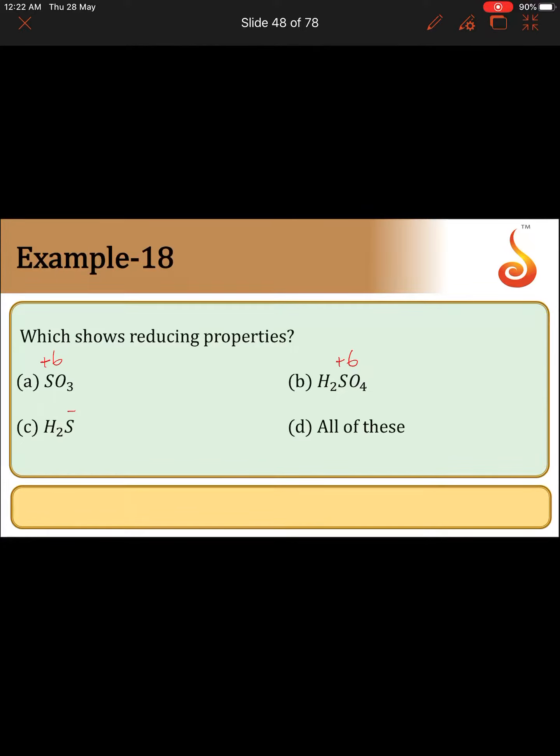And in H2S, sulfur oxidation state is -2. First of all, sulfur's outermost electronic configuration is NS2 NP4. That means it contains 6 electrons. It is a 6A group element, having 6 electrons in the valence shell.